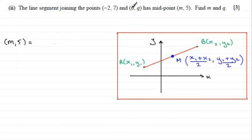The x coordinate will be (-2 + 6)—let's just show the working here—(-2) + 6 and that's all divided by 2. And for the y coordinate it will be (7 + q) divided by 2.